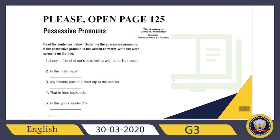Which one can you see here? Good — 'ours', right? You can underline it. 'Our' is my possessive pronoun; I don't need an apostrophe and 's'. So how can I write it correctly? I can write: Lucy, our friend, is traveling with us to Tennessee.